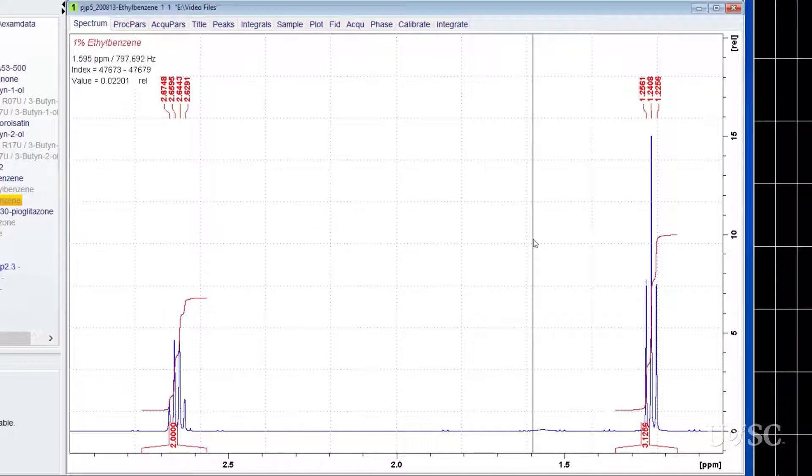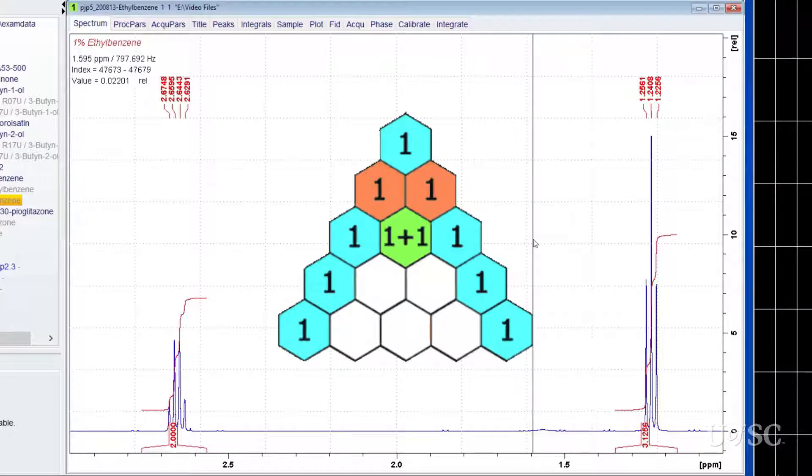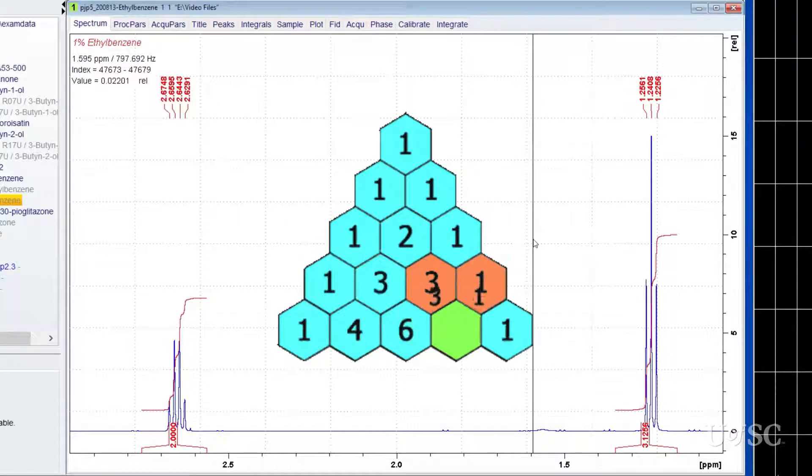Remember the simple rule that the number of resulting lines in a resonance is equal to the number of equivalent neighboring protons plus 1. The methyl protons come at 1.24 ppm and are split into a triplet by the two methylene protons. Another feature multiplets have is that the relative intensities of the lines follow a binomial distribution. While doublets will have two lines of equal intensities, triplets will have lines with intensities in the ratio of 1 to 2 to 1. Pascal's triangle can be used to predict these intensities for other multiplets.